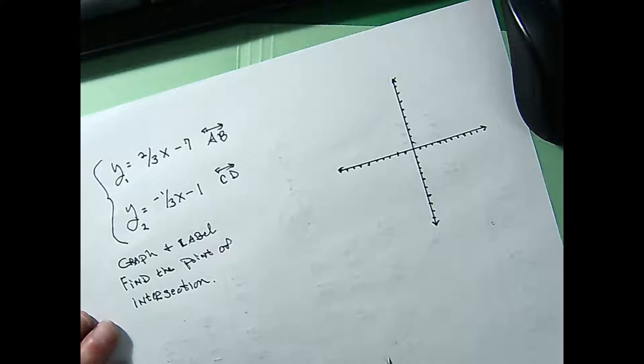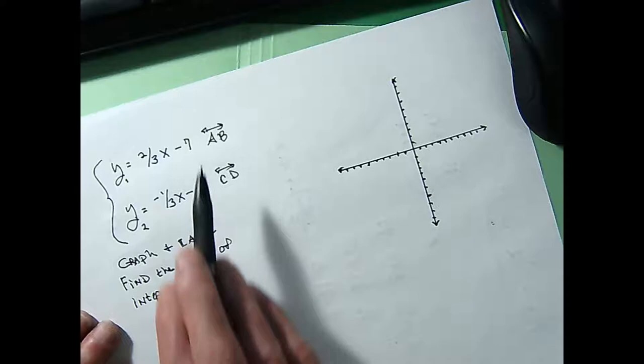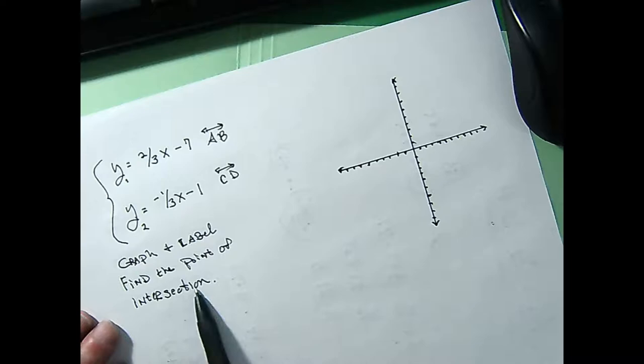I'm going to show you something real quick so you can get the attendance check right today. It asks, what are you going to do to find the point of intersection when you graph a couple of lines? So I'm going to call this line AB, I'm going to call this line CD, and I'm going to graph and label them. I'm going to find the point of intersection between these two lines.